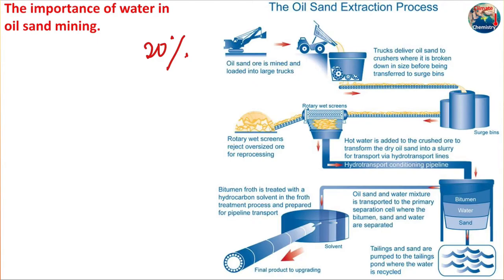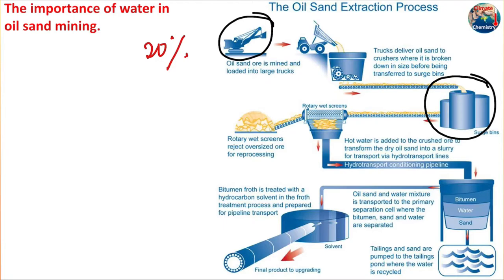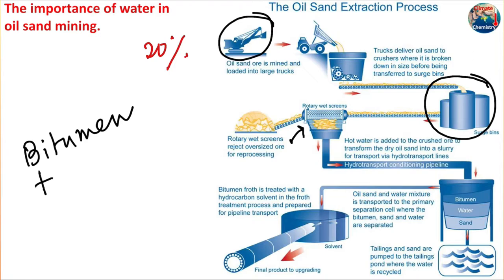To understand how this contamination happens, you need to understand the oil sand mining process. There are two types: surface mining and underground mining. Surface mining contributes 20% of the total Canadian oil sand mining. In surface mining, oil-containing sand is dug up and put into a crusher, the crushed particles are stored in a surge bin, and then mixed with hot water. This is important because the material we're discussing is bitumen — almost a semi-solid, tar-type material that is not movable.